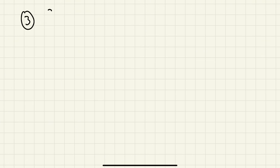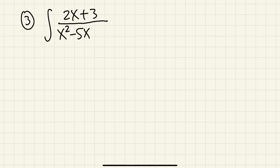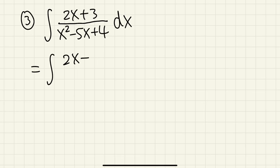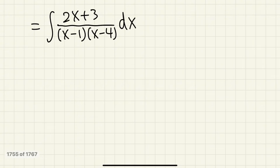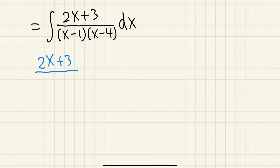Number 3: the integral of (2x + 3) over (x² − 5x + 4). Can we factor the denominator? Yes — this is the integral of (2x + 3) over (x − 1)(x − 4).